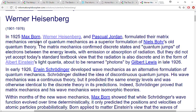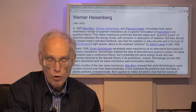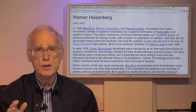In early 1926, Schrödinger developed an alternative formulation called wave mechanics. Schrödinger really disliked the idea of discontinuous quantum jumps — his wave theory was a continuous theory — but it predicted the same energy levels and was otherwise identical in its predictions. Schrödinger himself proved that matrix mechanics and his wave mechanics were isomorphic theories: they produced exactly the same results. It seems quite astonishing that within a few months, this extraordinarily complicated matrix mechanics appeared alongside an equivalent wave formulation.